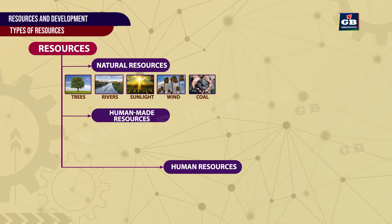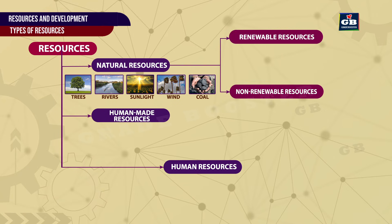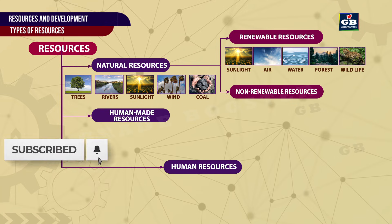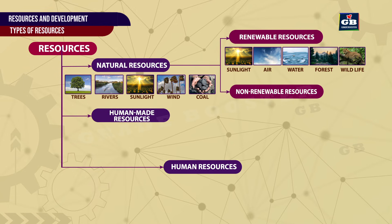These natural resources are further divided into renewable resources and non-renewable resources. Renewable Resources are those that replenish themselves. For example, sunlight, air, water, and biological resources like forests and wildlife.